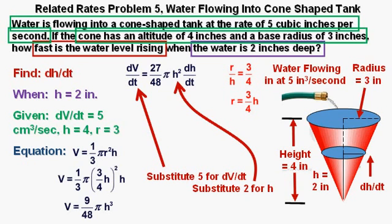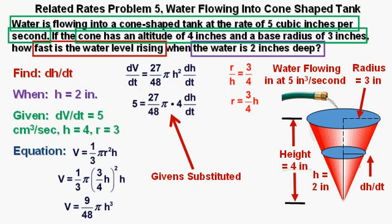Next, we can substitute in our givens of 5 for the dV/dt and 2 as the value of h. And here they are substituted.